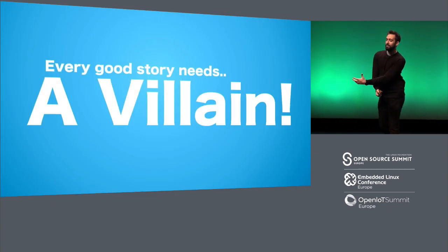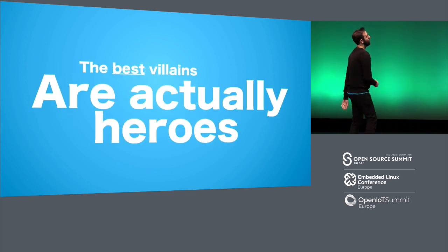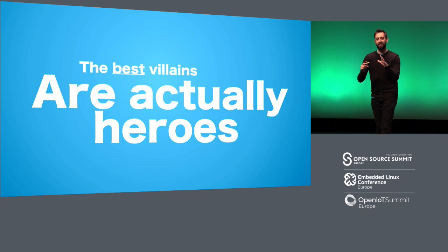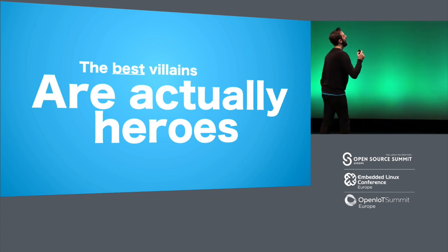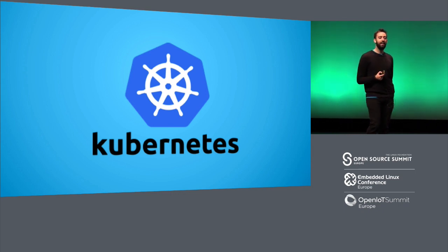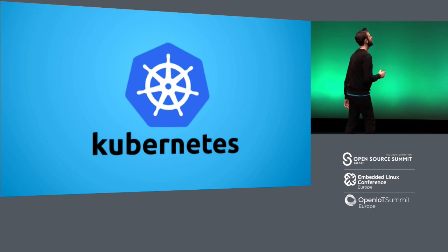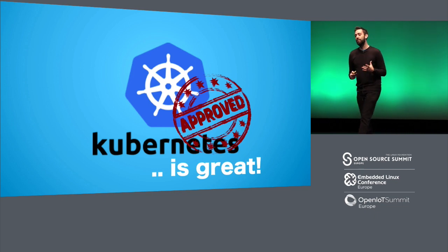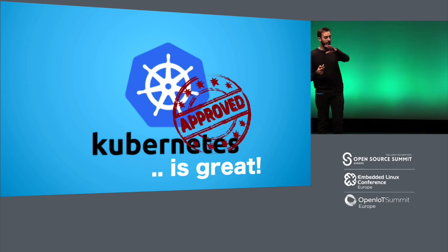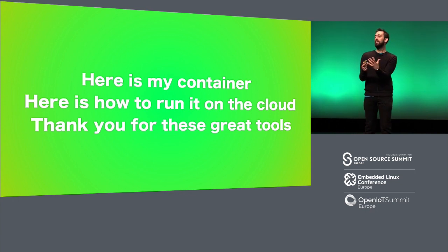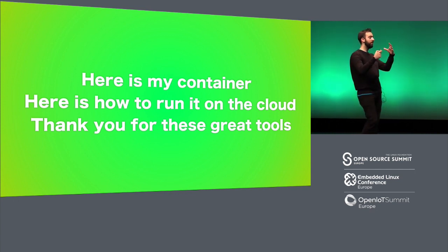A good story needs a villain. This is one of those stories where the villain is actually very much a hero — a double hero in this story. And that's going to be Kubernetes. Has anyone heard of Kubernetes? All right, I came to the right place. Kubernetes is amazing. It's fantastic software with different goals, which is fine. It's at a lower level of the stack. Kubernetes gives you amazing tools that you can use to build distributed systems.